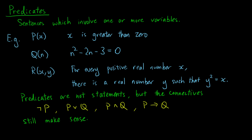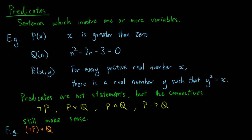Nonetheless, we can still define the four connectives we use in statements on predicates, and they would still make sense. For example, using the predicates we have defined, 'not p and q' means 'x is greater than zero, and n squared minus 2n minus 3 is zero.'